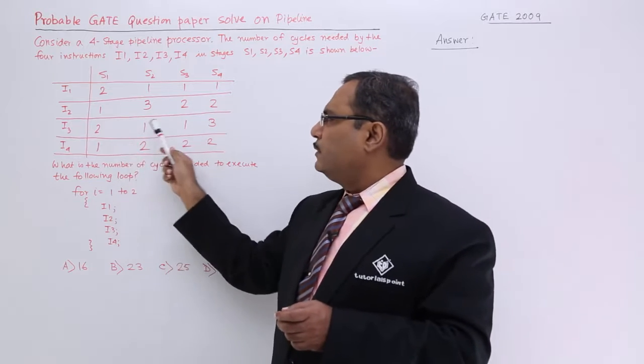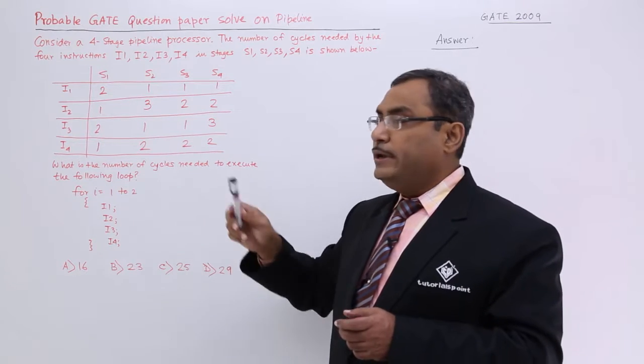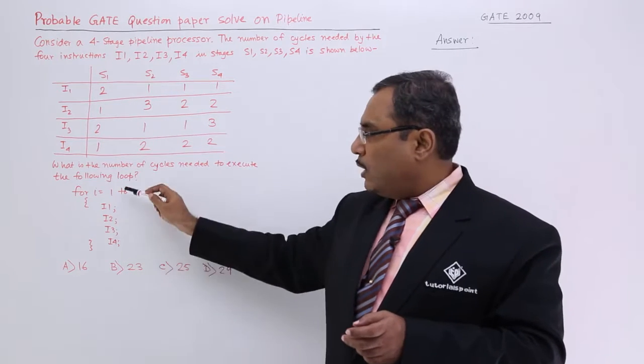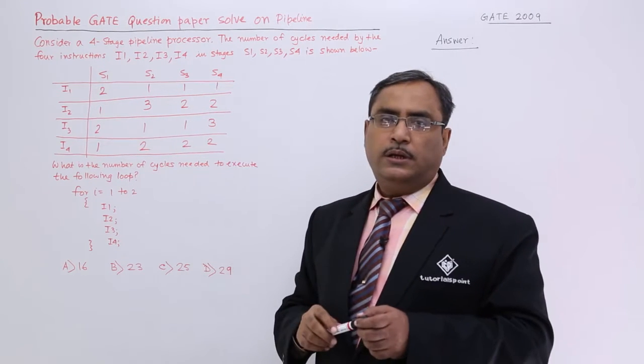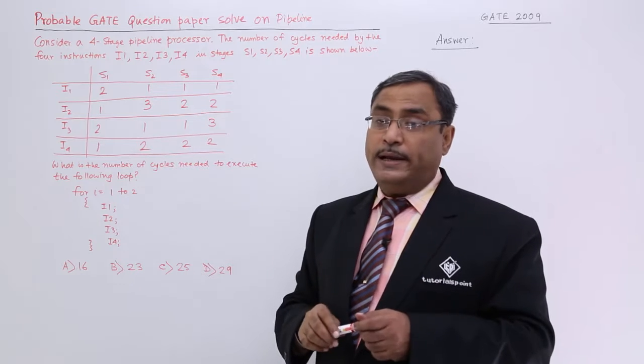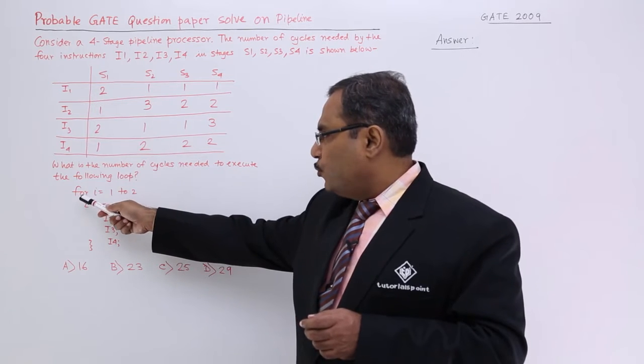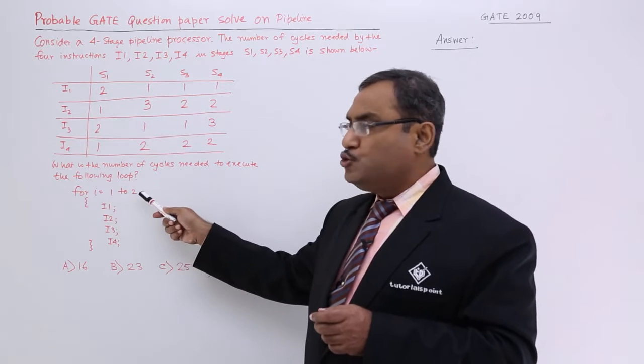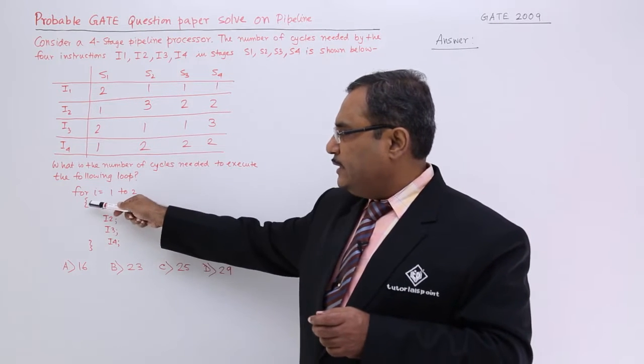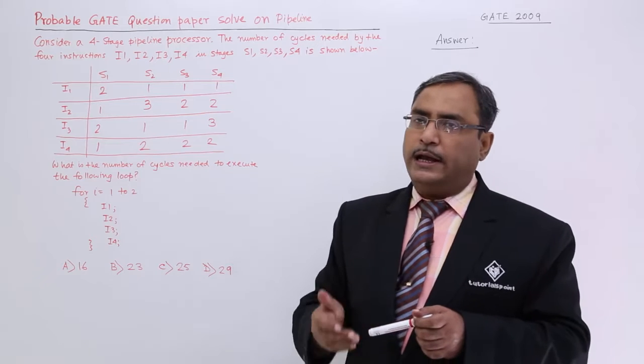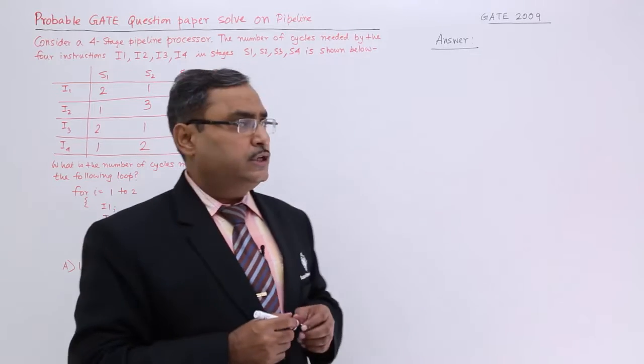Similarly for other data that have been provided, what is the number of cycles needed to execute the following loop? One program segment has been given. I shall have to tell that if I want to execute this program segment in this particular given data, then how much number of cycles it will take? Now what is the program? For i equals 1 to 2, that means it is a loop which will go on executing twice and these are the set of instructions within this loop body: I1, then I2, then I3, then I4, and this loop will get executed twice.